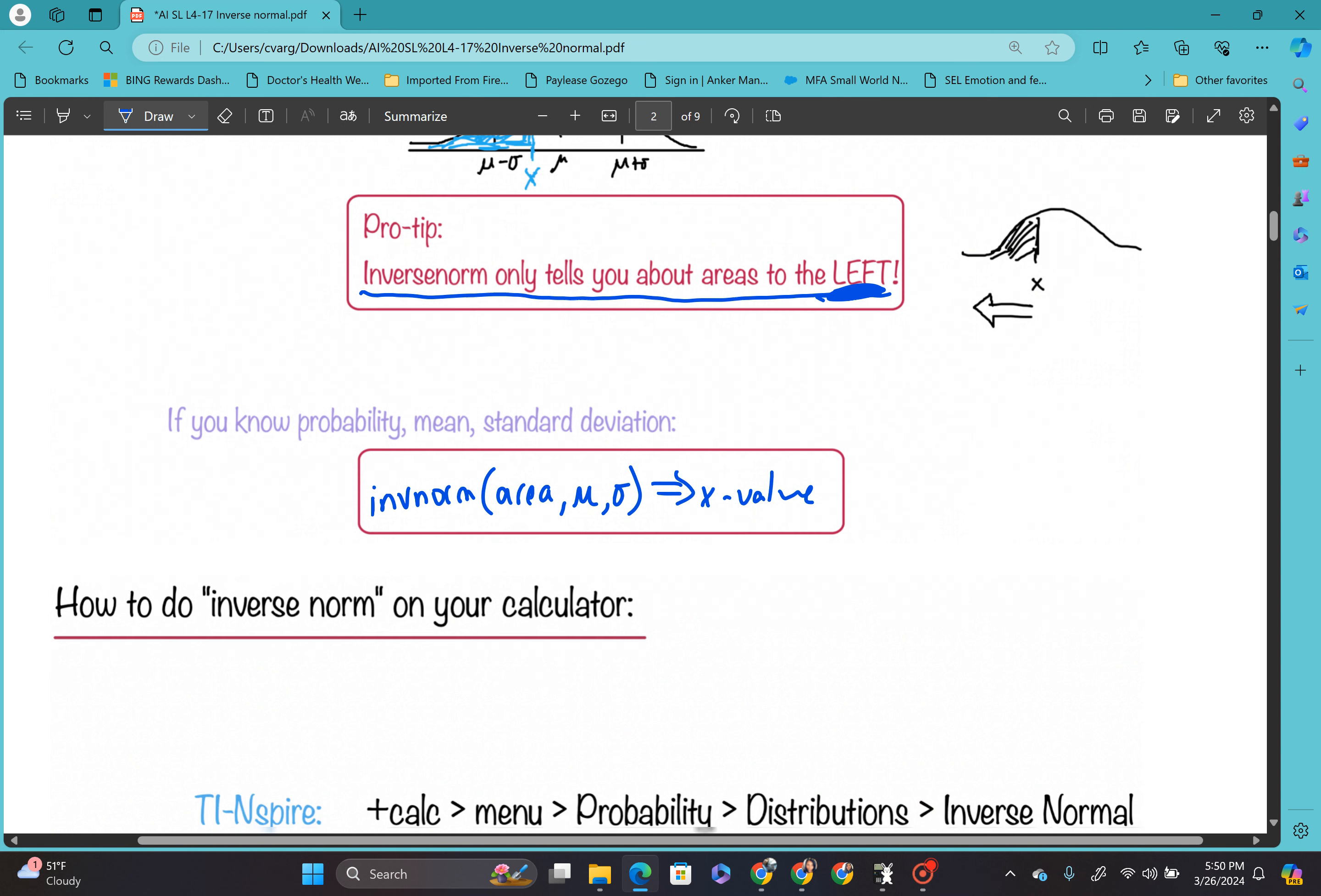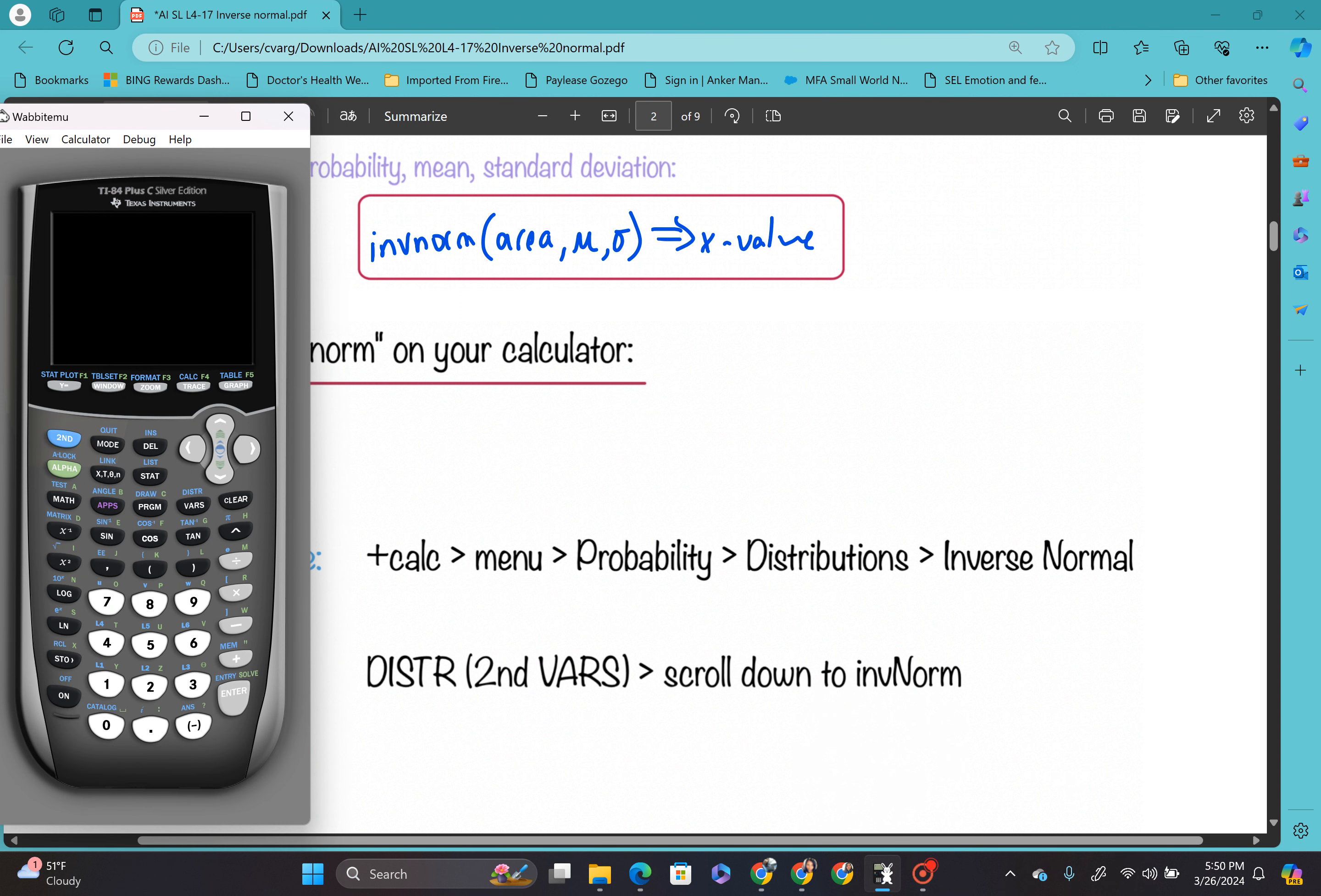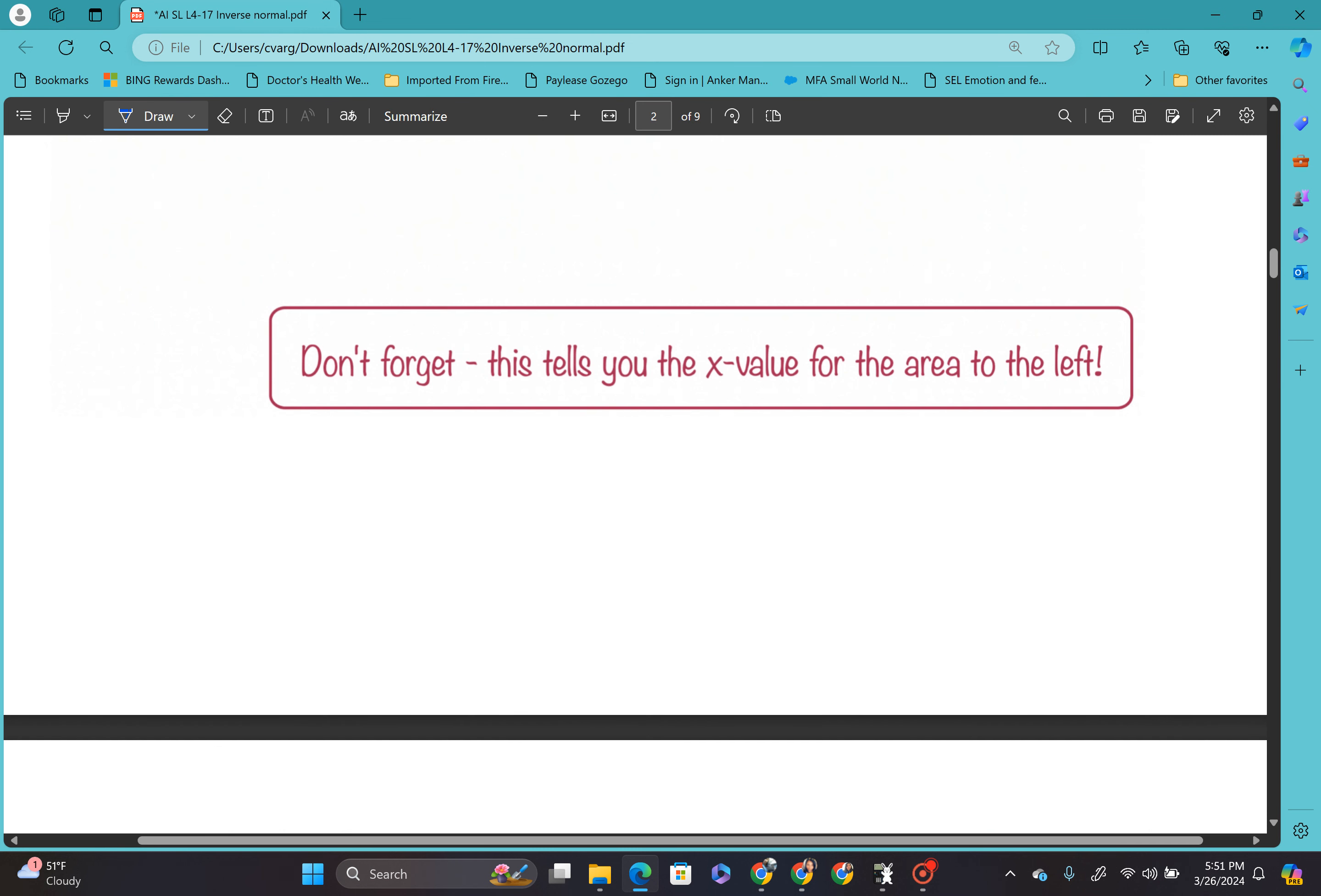All right. So how do we do inverse norm on our calculator? So you take your calculator. Hopefully my calculator turns on. Very good. So where do we go for distribution? You go second vars. And look, option number three is inverse norm. So this is what you do. And it even prompts you. So what is the area? What is the mean? What is the standard deviation? So let's go ahead and remember that this definitely tells you only areas to the left.